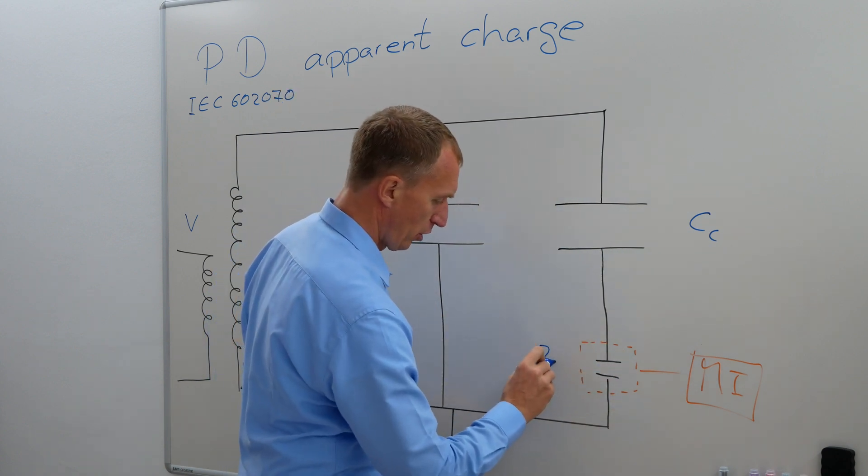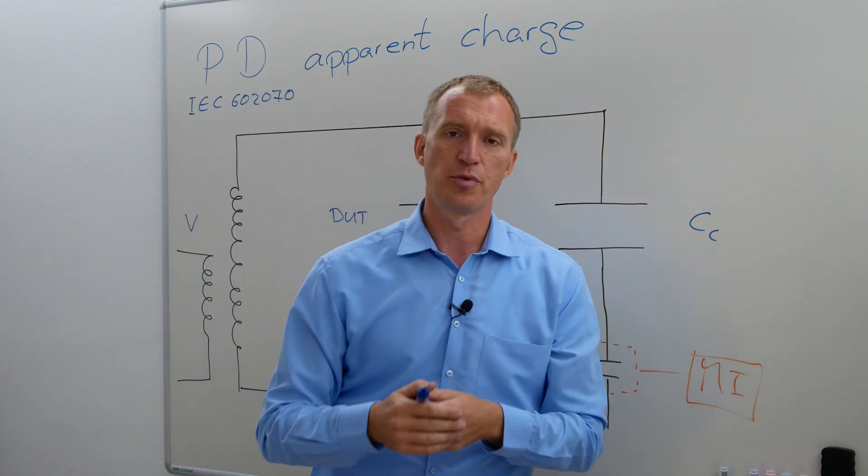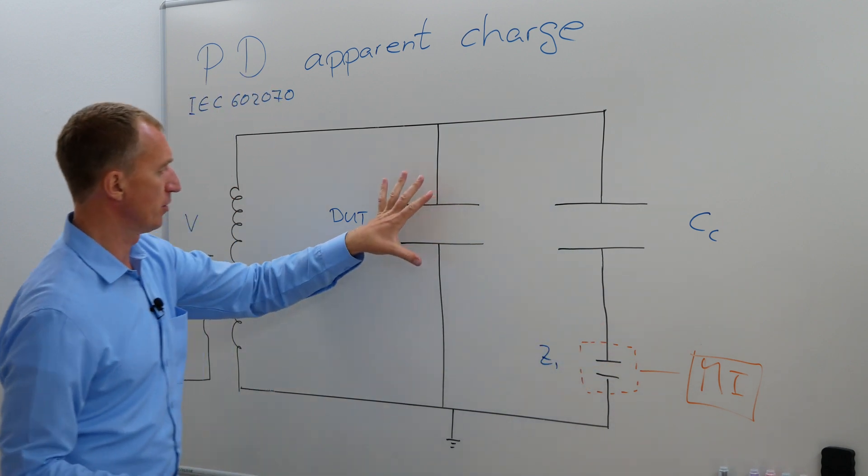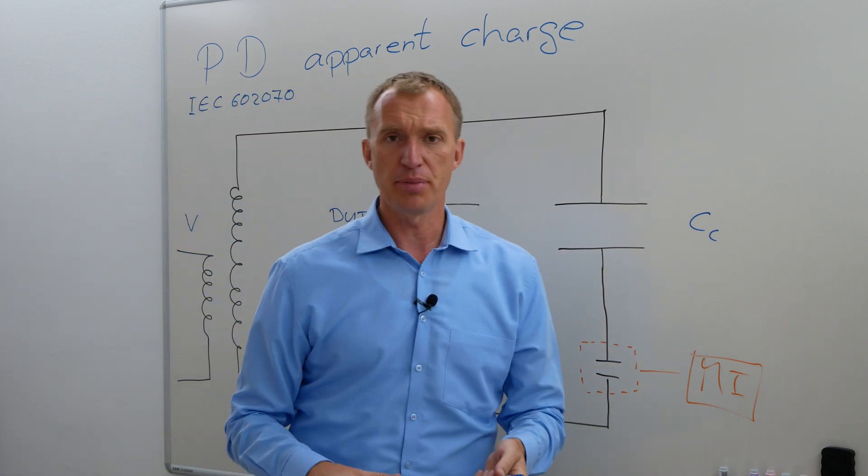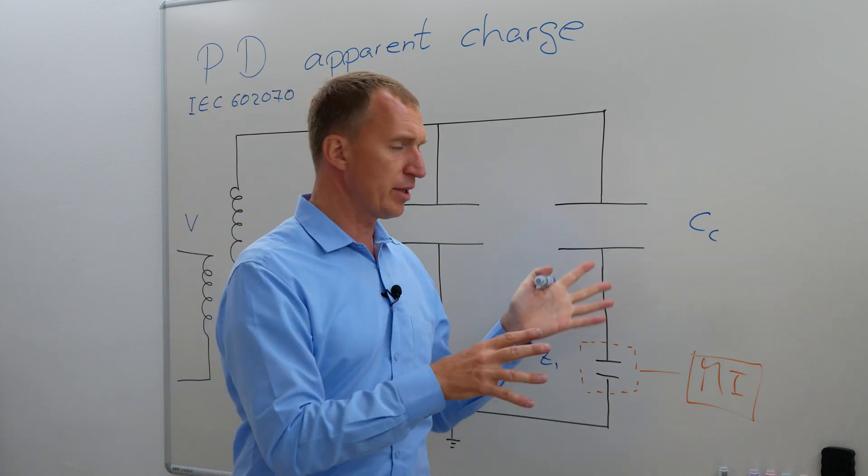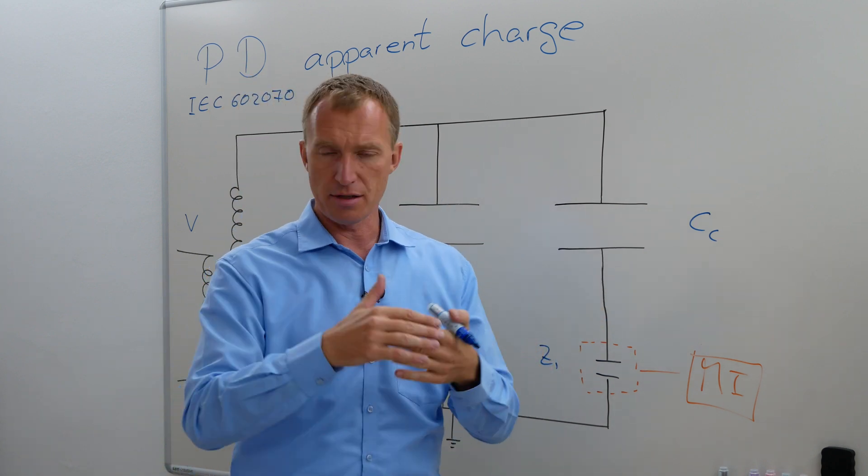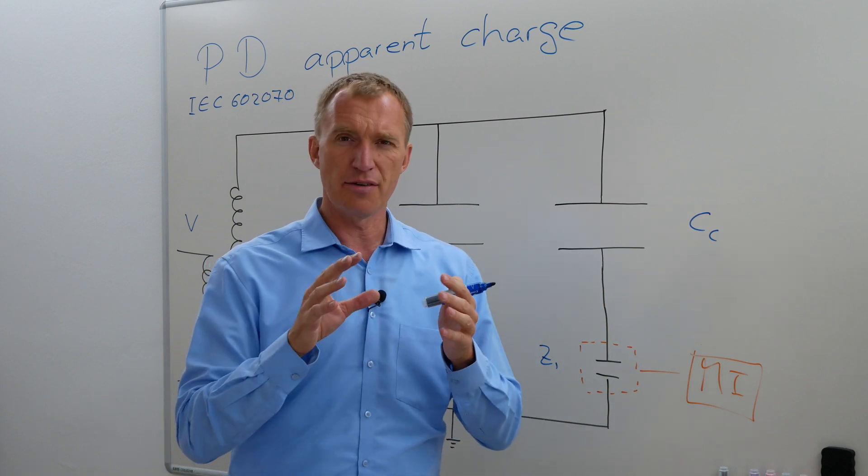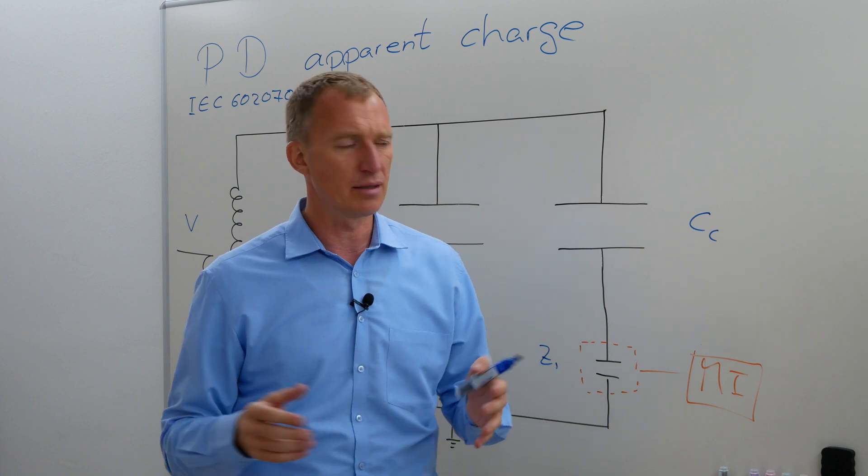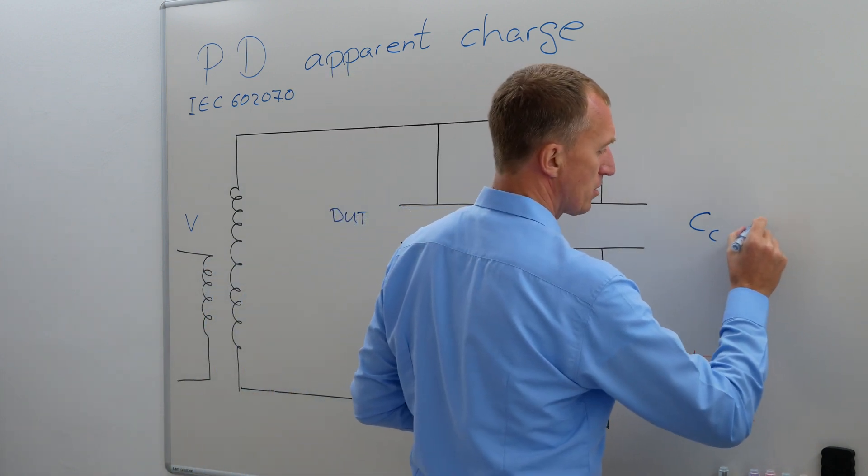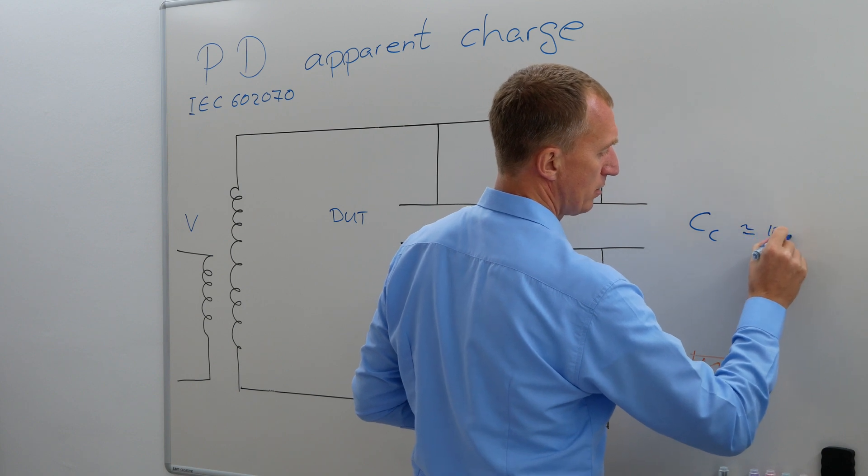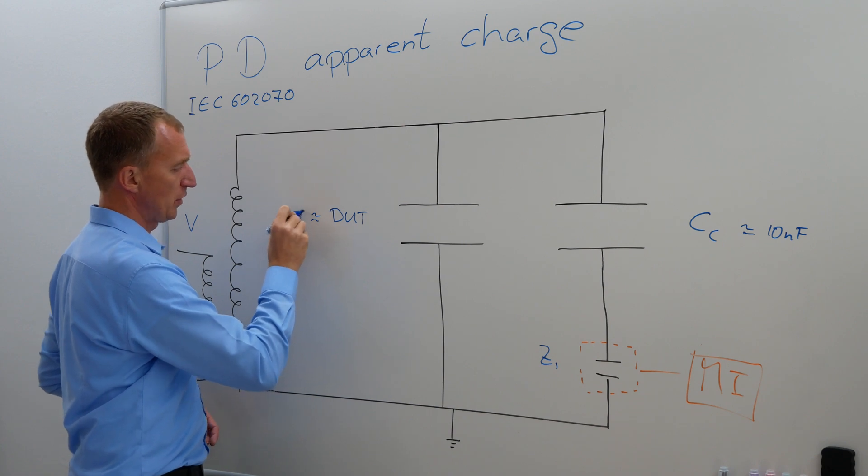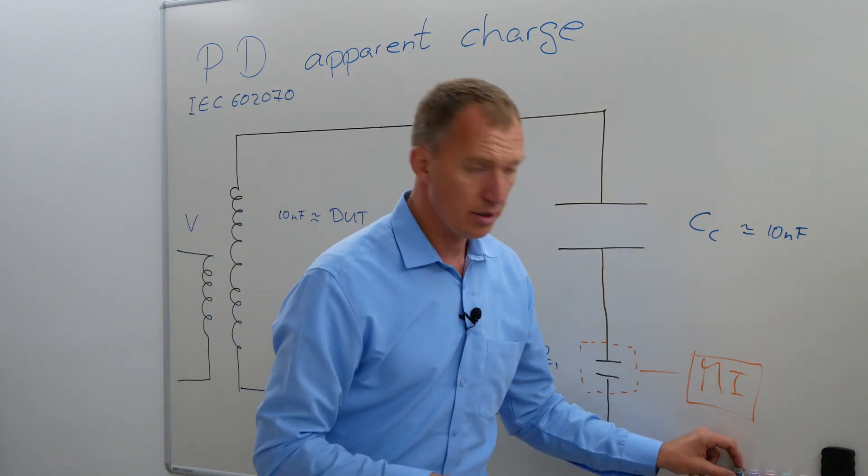And this one over here is very often called measurement impedance. However, the majority of people I know, they call it a quadrupole. So coupling capacitor, quadrupole, device under test. And now let's imagine for the time being that the device under test and the coupling capacitor are just a capacitance, a pure capacitance, no resistance, no impedance in there. And let's imagine for the time being that they have around the same capacitance, around 10 nanofarad.